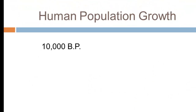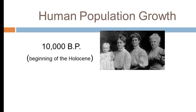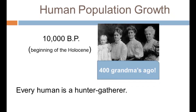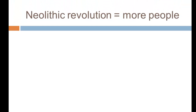Now let's move from our model to human population growth, focusing on the last 10,000 years. 10,000 BP marks the beginning of the Holocene — about 400 grandmothers ago. The 400th grandmother would have been a hunter-gatherer, because 10,000 years ago every human was a hunter-gatherer, and estimates put the global population at about 10 million.